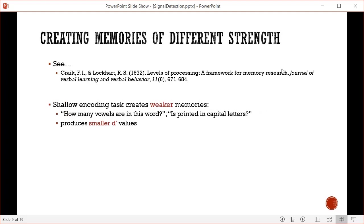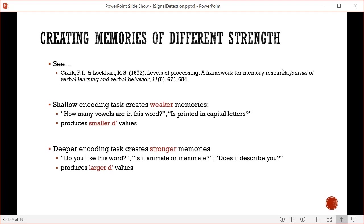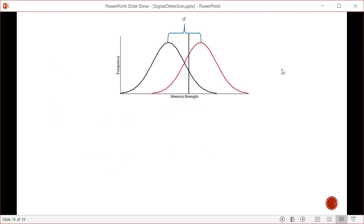How do we create memories of different strength? Going back to Craik and Lockhart's levels of processing, we can alter what people do with information when forming memories. Shallow encoding, like judging how many vowels are in a word or if it's printed in capital letters, creates weaker memories and smaller D prime values. Deeper encoding tasks that make you think about meaning - like whether you like the word or if it's animate - promote stronger memories and larger D prime values.